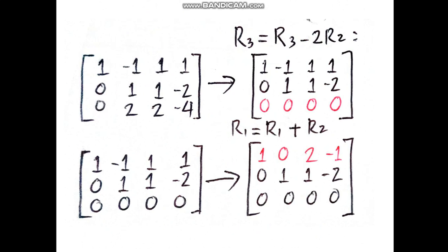To get the next matrix, R3 minus 2 times R2. So the third row has two values for zeros.